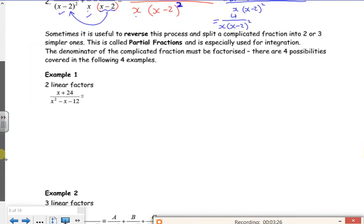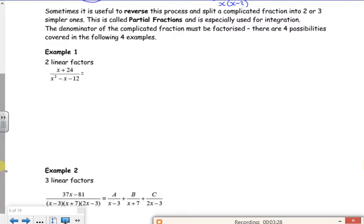But what we want to do is reverse the operation. We want to split it, and it's called partial fractions. It helps us for integration and for binomial stuff. Now then, the way to do it, that bottom line is, if I factorize that, it's x minus 4 times x plus 3. Now each linear factor, each bit, could possibly have its own fraction.